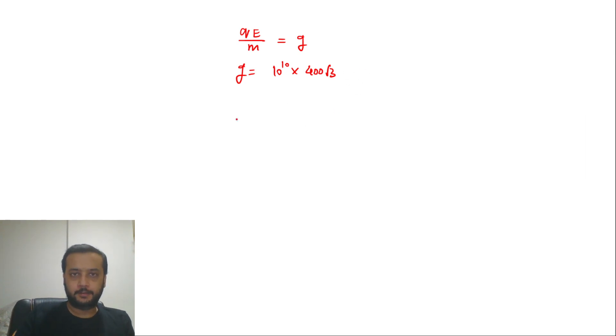This becomes the effective gravity, so we can say this is 4 root 3 into 10 to the power 12. This is the effective gravity in the negative y-direction. Since the electric field is in the downward direction and the charge is positive, we can say gravity ka direction ye ho jayega, matlab this is the effective gravity, not the actual gravity.